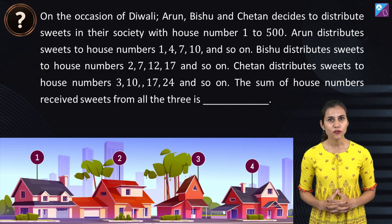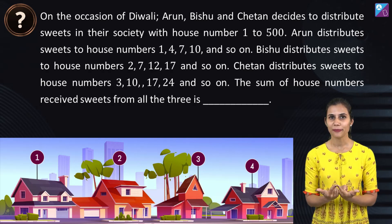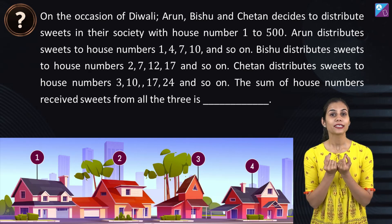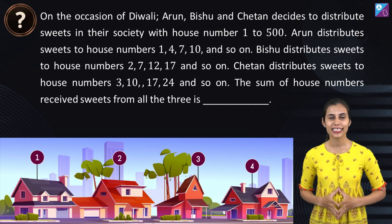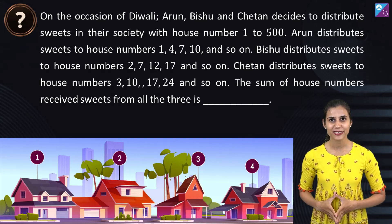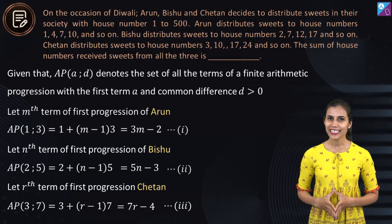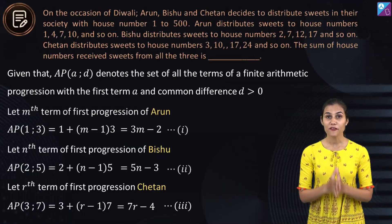We have to find the sum of all those house numbers that received sweets from all three of them. So let's get started.